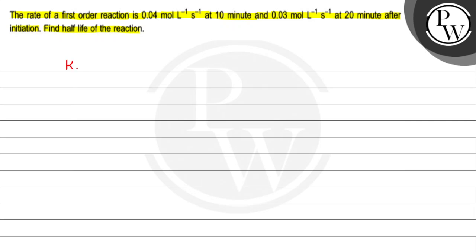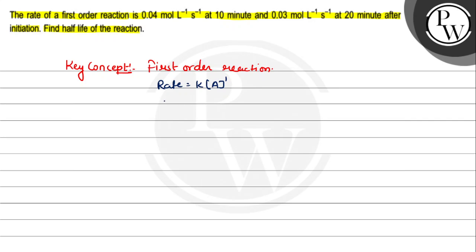The key concept here is first order reaction. For a first order reaction, the rate is equal to K times the concentration of A to the power 1. We are given the rate is 0.04 mole per liter per second at 10 minutes, so 0.04 equals K times the concentration A at 10 minutes.